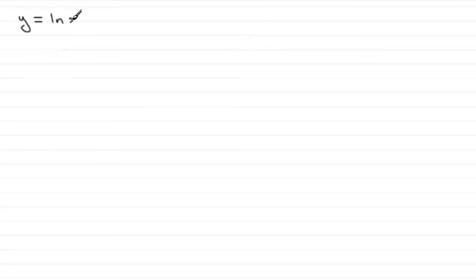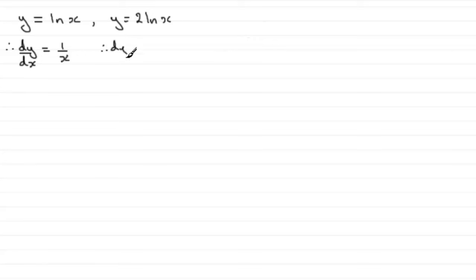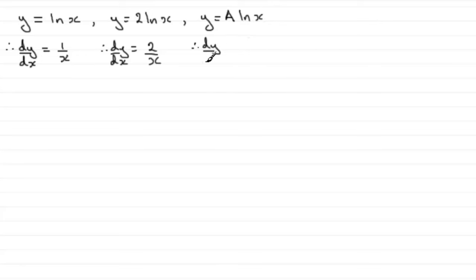To appreciate how to integrate those integrals, we've got to step backwards to differentiating — say, y equals the natural log of x. This is a standard differential. dy/dx equals 1 over x. If we had y equals 2 times the natural log of x, then dy/dx equals 2 times 1 over x, or simply 2 over x. In general, if y equals any constant a multiplied by the natural log of x, then dy/dx equals a times 1 over x, which gives us a over x.